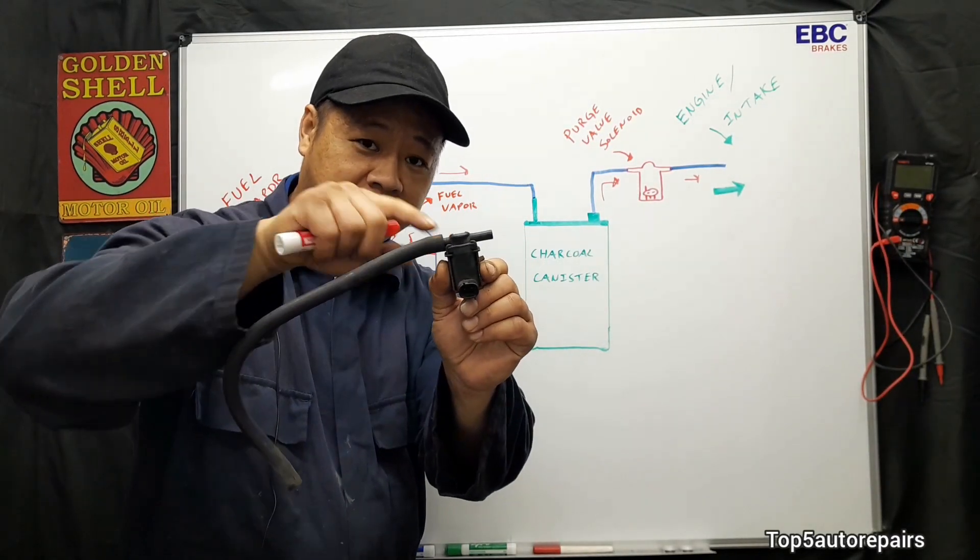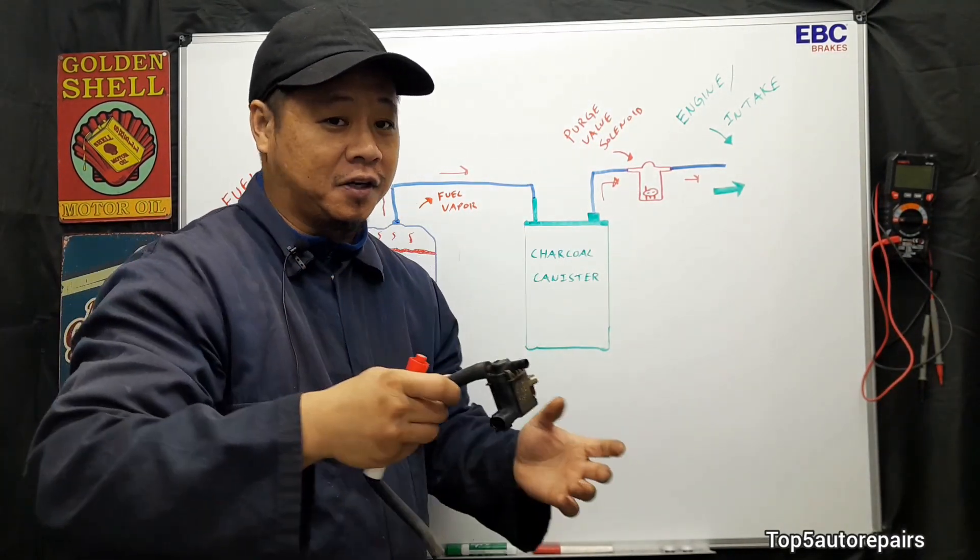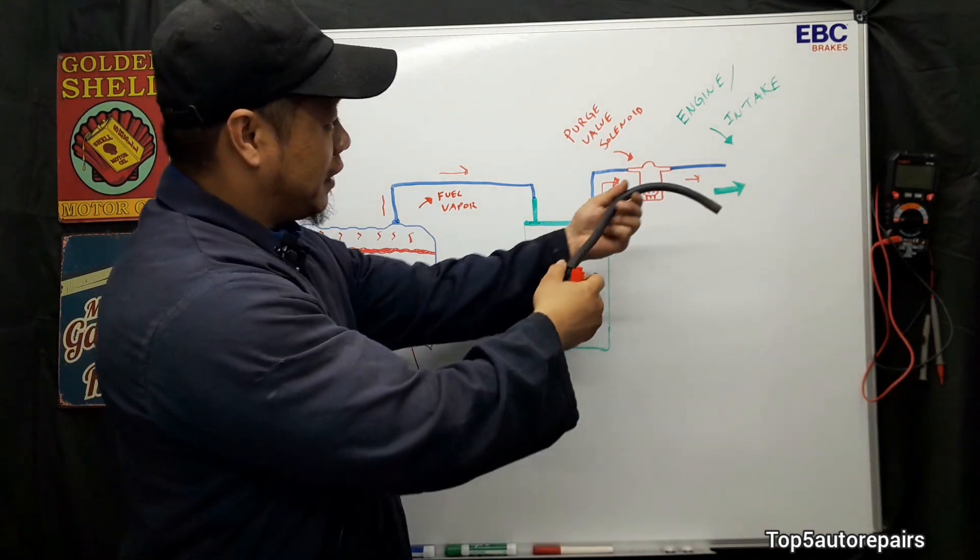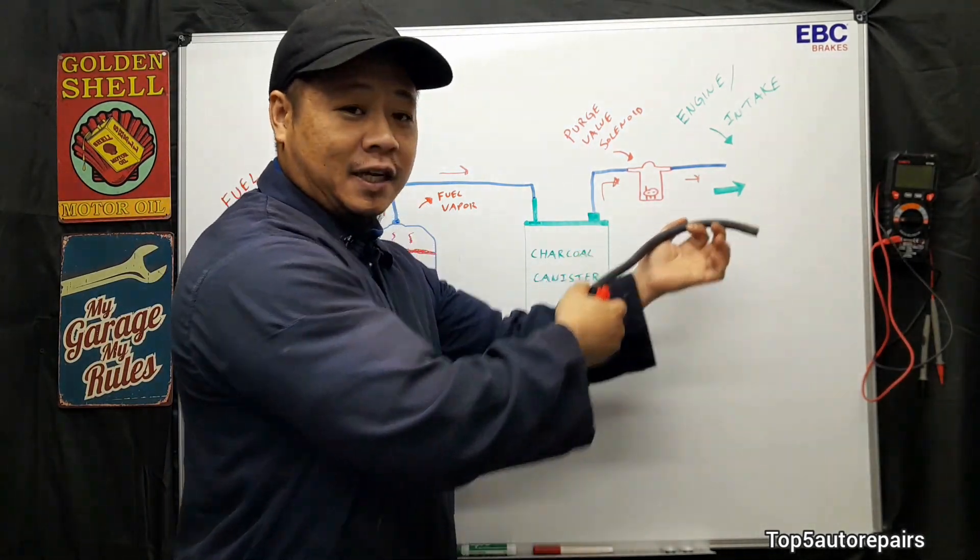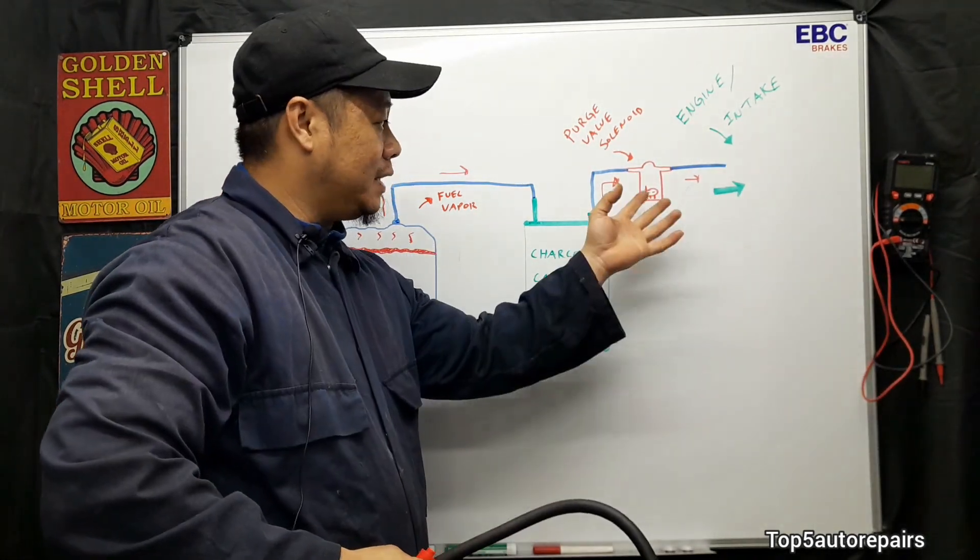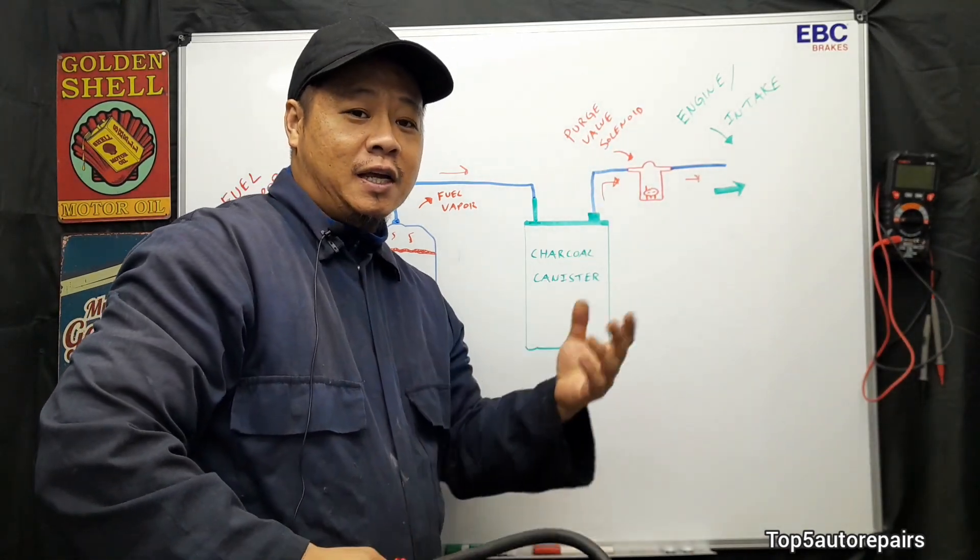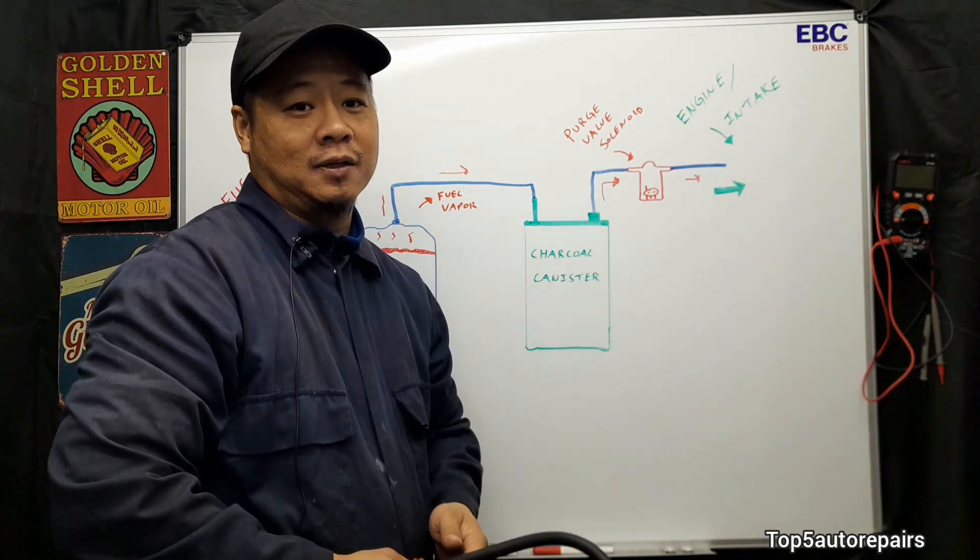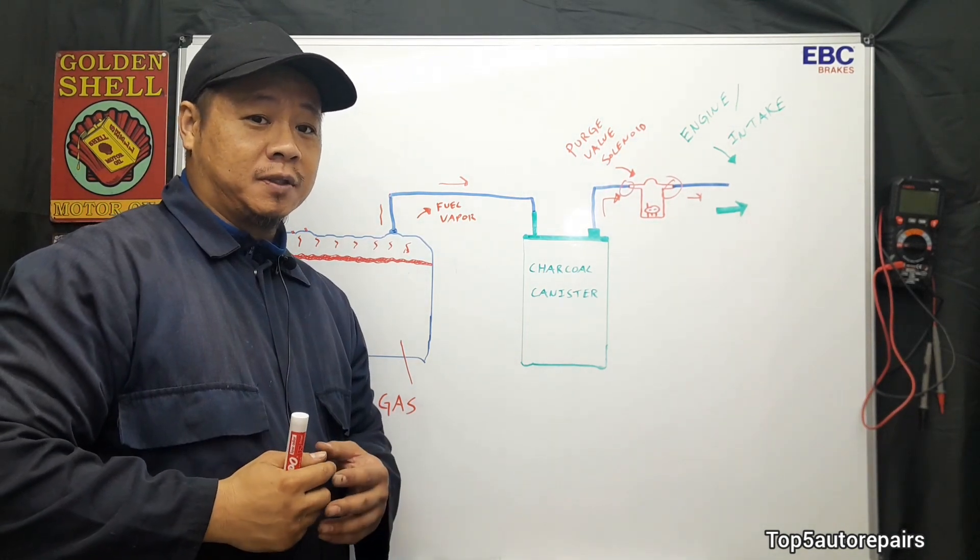If you have a problem with the purge valve solenoid, for example let's just say it is stuck open, and since this hose over here is mounted on the intake manifold, what's going to happen when it is stuck open at all times is it's going to cause a vacuum leak. So when you have a vacuum leak, you're going to notice a few symptoms.